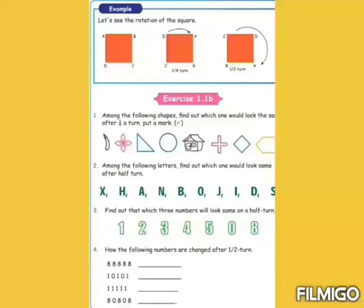Now, we will see the exercise. First, among the following shapes, find out which one would look the same after 1 by 4th turn. First symbol 1 by 4 turn not. Next floor 1 by 4 turn, this again will come. Next circle, next plus symbol, next diamond shape. So answer: floor, circle, plus symbol, diamond shape. 4 only answer.